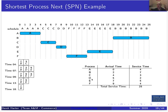For the processes used in these video lectures, here's how Shortest Process Next would look. Process A arrives at time zero — there's no other process, so by definition A is the shortest and gets scheduled, running until done since it's non-preemptive. At time four, B arrived at time two and C arrived at time four. B has a service time of seven and C has a service time of three, so C gets selected.